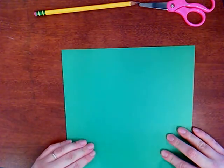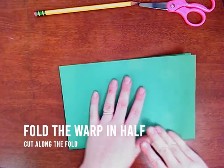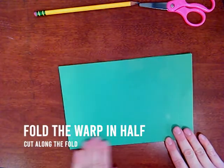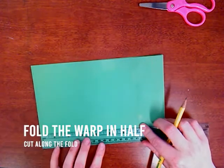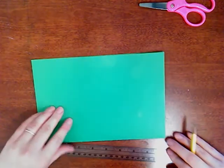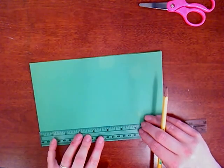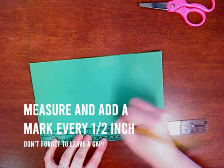So for my warp, I'm going to fold my warp in half, hamburger style. Next, you're going to measure along the fold. Measure a tick mark every half inch, draw a little tick mark.